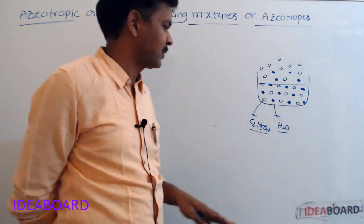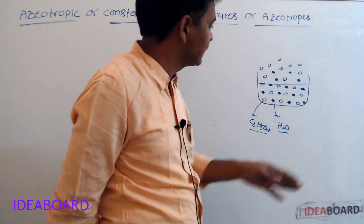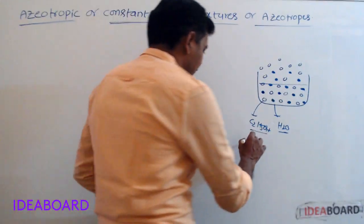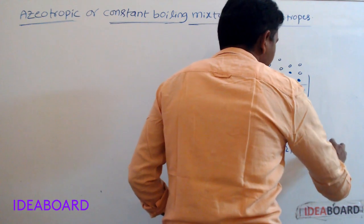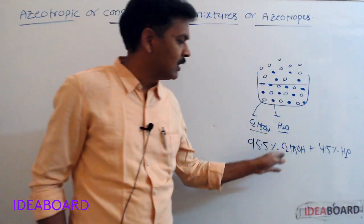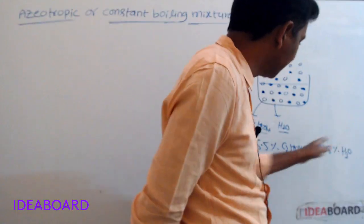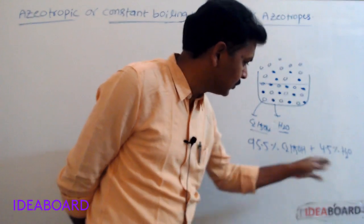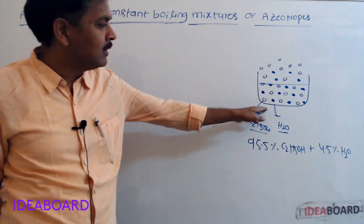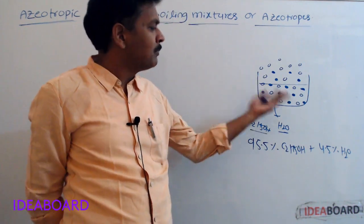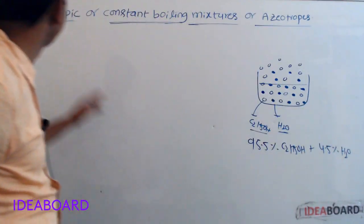But if you take these two liquids in a particular composition — 95.5% ethyl alcohol plus 4.5% water, which is called rectified spirit — then in both the liquid and vapor phases, their composition is the same. Here, composition means mole fraction; their mole fractions are the same in both phases. That mixture is called an azeotropic mixture.